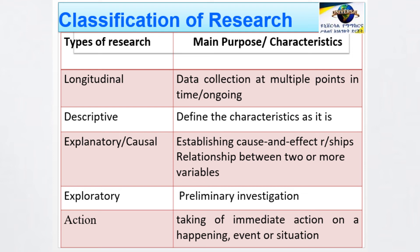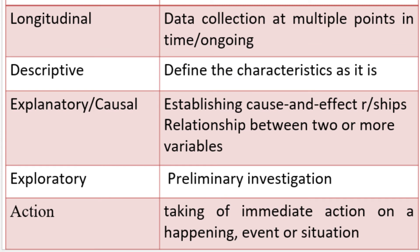The other type is descriptive research. As the name implies, the aim of descriptive research is simply to describe the characteristics of phenomena as they are. Explanatory and causal research aims to establish cause-and-effect relationships and to determine the influence of independent variables on dependent variables. If you want to investigate the relationship between two or more variables, the appropriate research type is explanatory, also called causal or hypothesis testing studies.